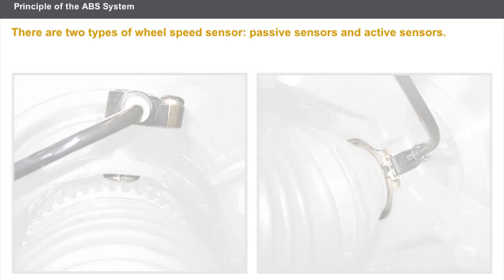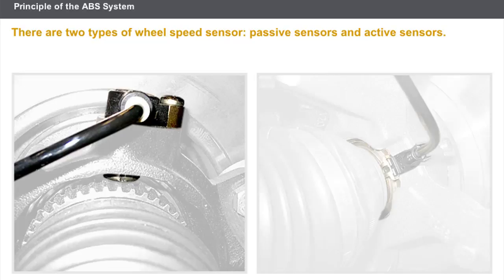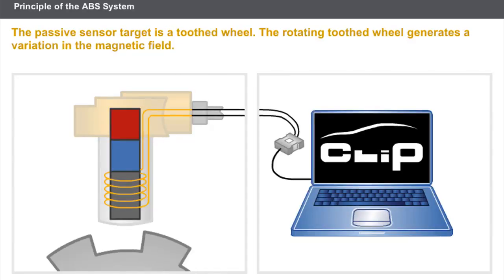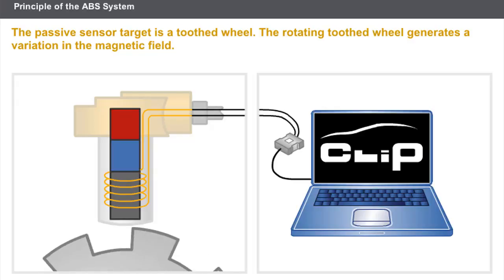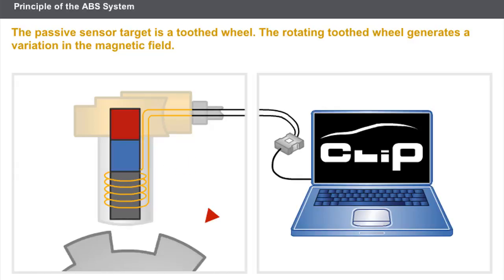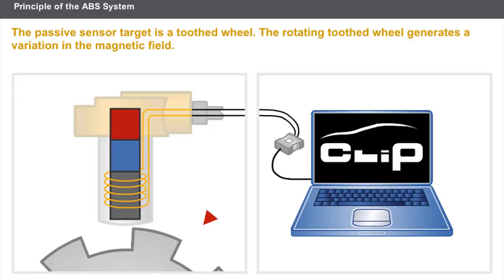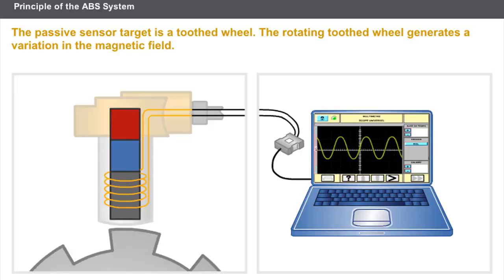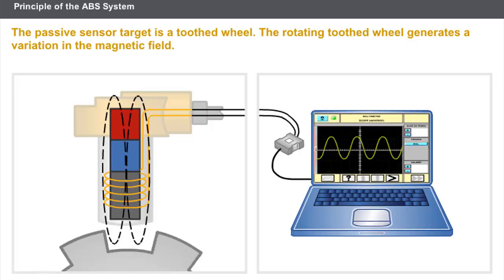There are two types of wheel speed sensor: passive sensors and active sensors. The passive sensor, also known as the inductive sensor, comprises a permanent magnet and a coil. The sensor is fitted opposite a target. The target is a toothed wheel, which may be known as a pulse wheel. The rotating toothed wheel generates a variation in the magnetic field and induces a sinusoidal signal.